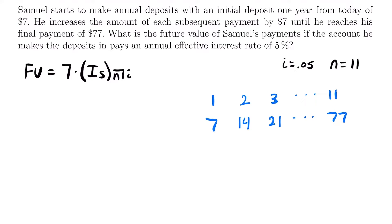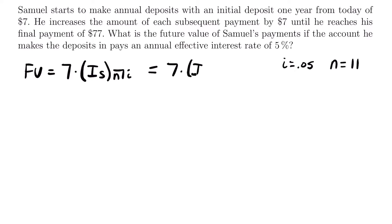If you didn't follow that approach, you could also use the brute force method — just write out all the payments: 7, 14, 21, 28, 35, and so on until you reach 77, then count them. Either way, you'll find N equals 11. So we can write that this is equal to 7 times the notation IS with N equals 11 and interest rate 0.05.